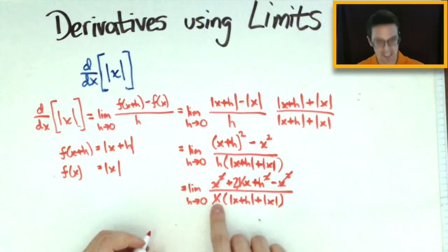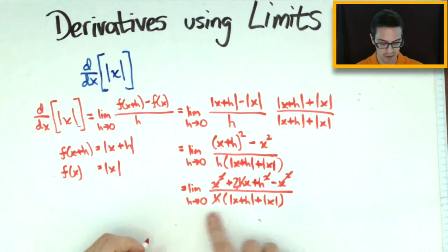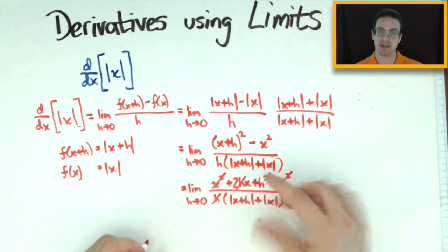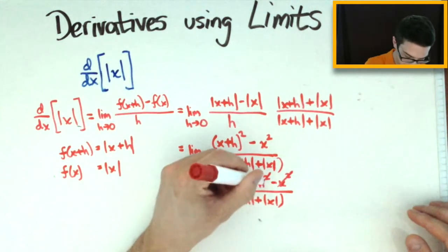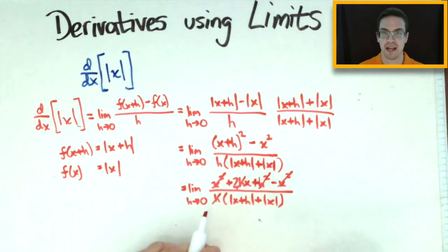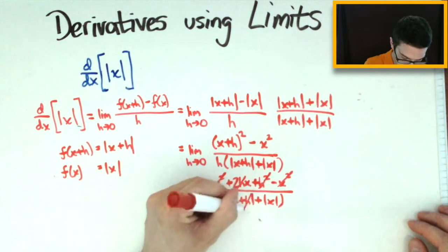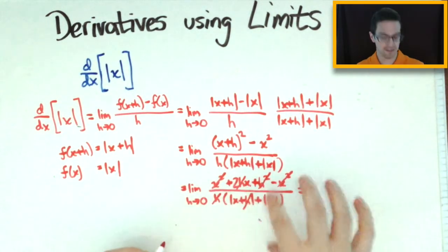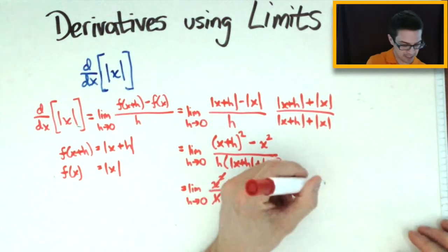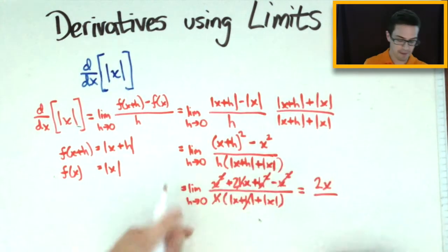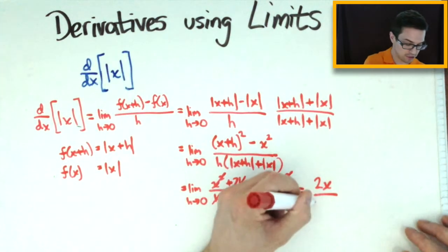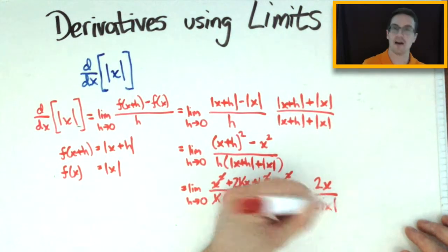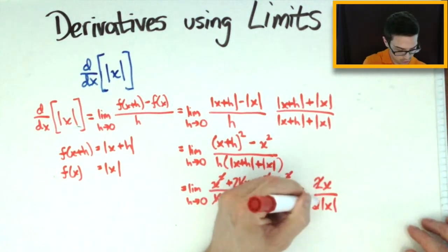Now we're not dividing by zero anymore — this function is completely continuous, so we can use direct substitution. Substituting h equals zero, the h terms go to zero, and what we're left with on top is 2x. On the bottom it's the absolute value of x plus the absolute value of x, which is 2 times the absolute value of x. The 2 over 2 cancels, leaving x divided by the absolute value of x.